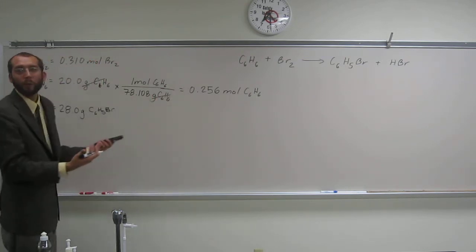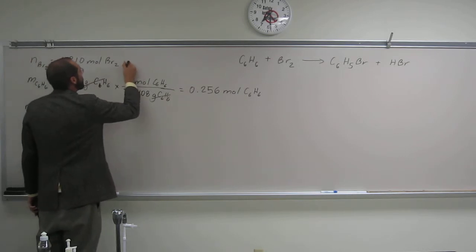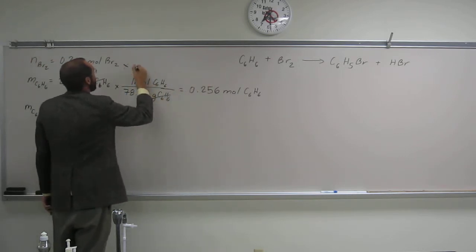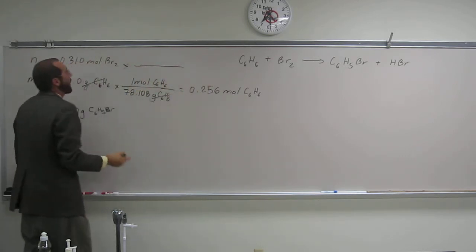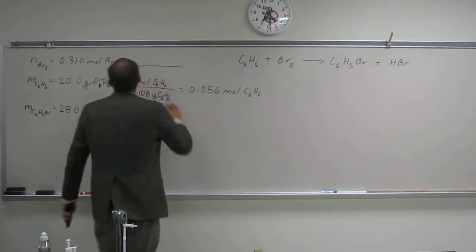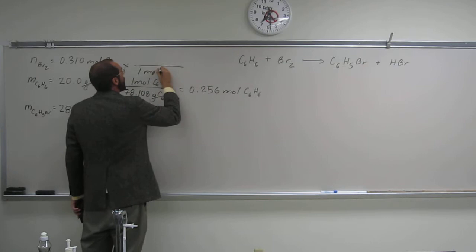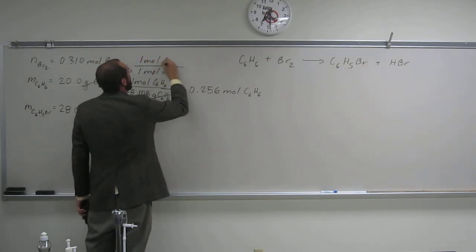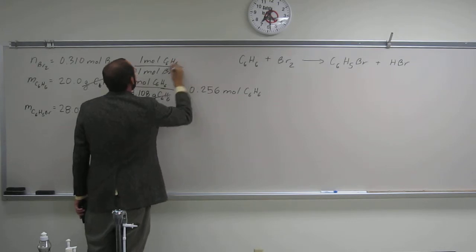How much benzene would we need if we had this one's bromine? Let's do it that way, just so we don't have all that string on the other side. So what's the ratio here? It's a one to one ratio. So one mole Br2 to one mole C6H6. So that cancels that out.